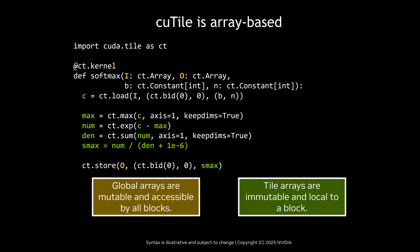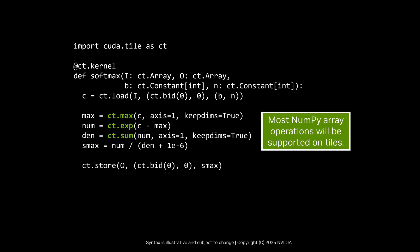Tile arrays are immutable NumPy-like arrays that are local to a block. Operations on tile arrays always return a copy, not a view, and are parallelized across the block. Most of the operations that you can perform on NumPy arrays will be supported on tiles. These array operations will be parallelized using the block's execution resources. But from the perspective of the block's single thread of control, these operations are performed sequentially.